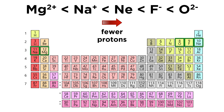To get this trend, we start with the species that has the most protons, since that will pull the electrons the most. That is Mg2+, with 12 protons, followed by Na+ with 11 protons, neon with 10 protons, the fluoride ion with 9 protons, and the oxide ion with 8 protons. Fewer protons means less attraction between the nucleus and the electrons, so the ionic radii expand, and this is the correct order of increasing ionic radius.